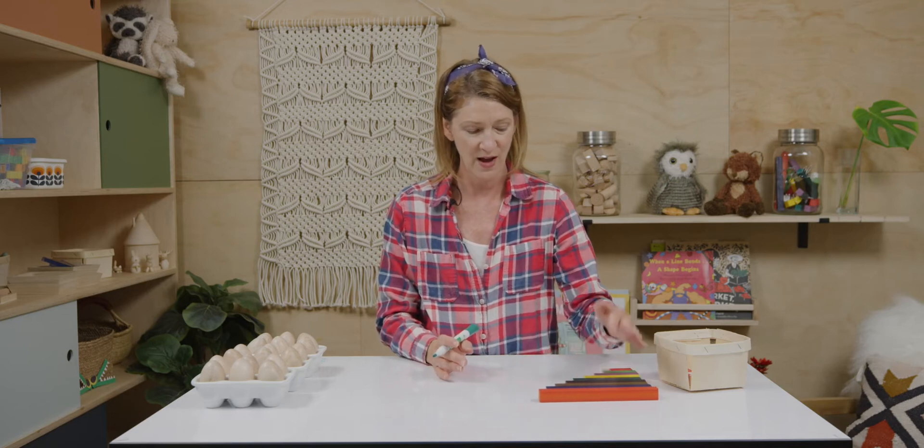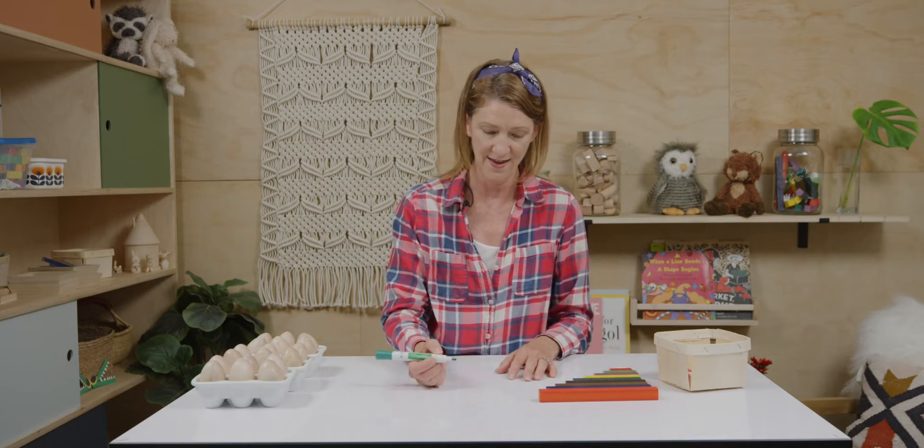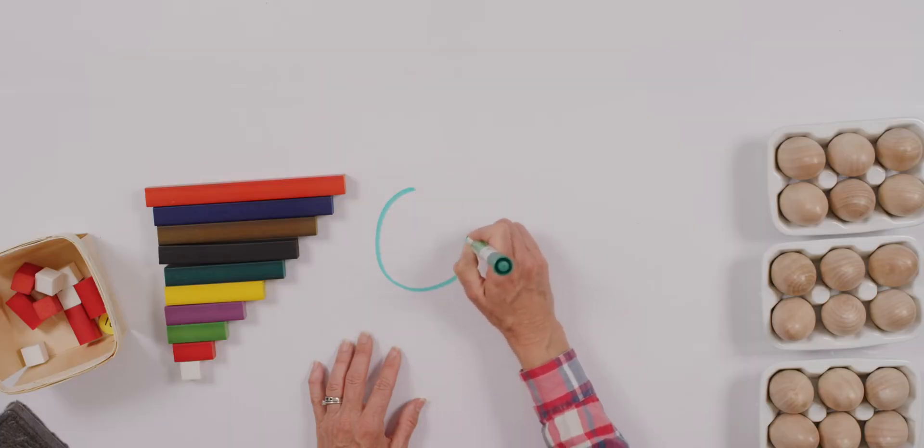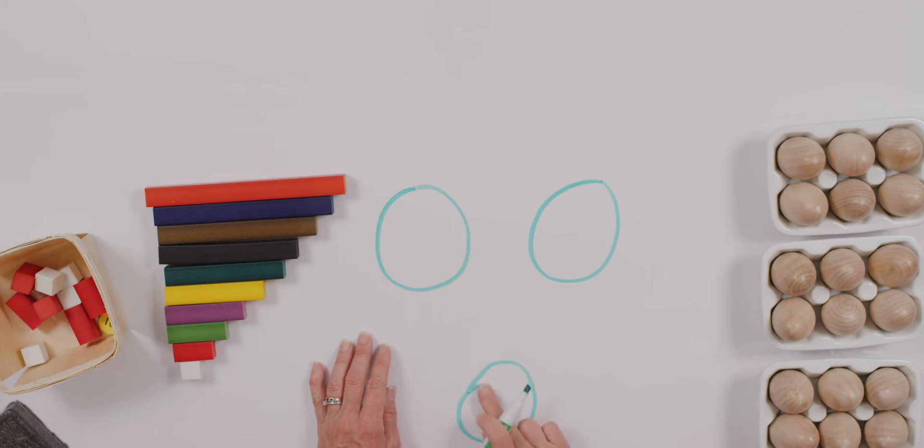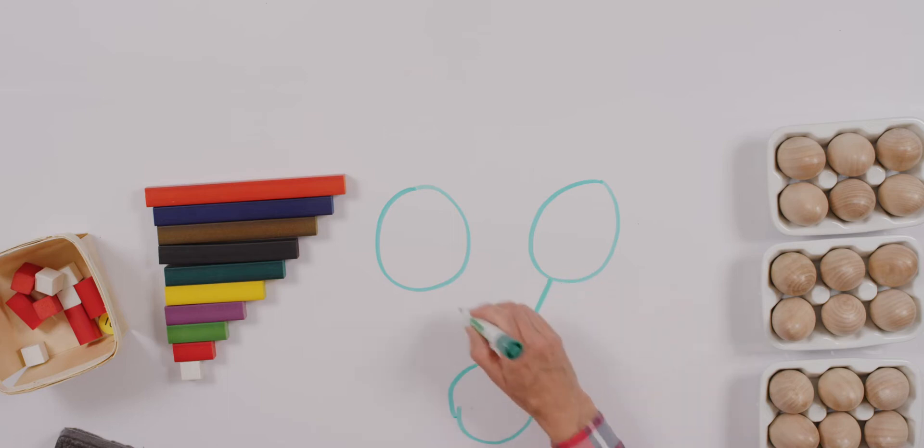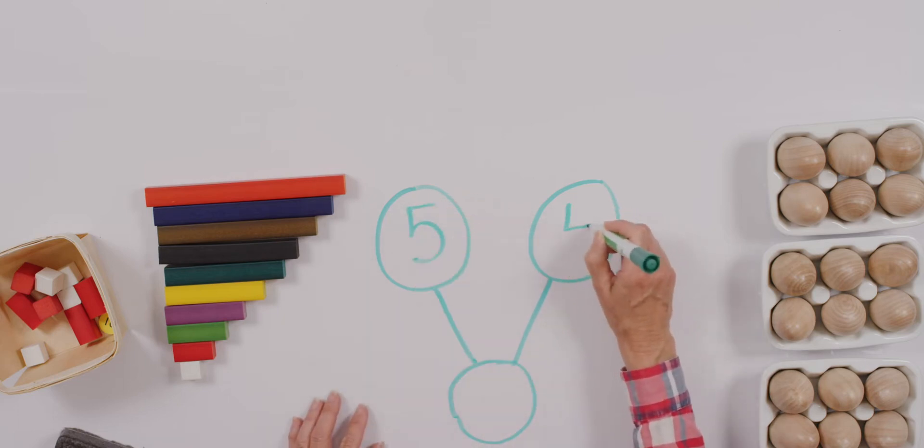All righty. Today we'll be talking about part, part, whole thinking and using some number bonds. So how about we start with thinking of my numbers. I wonder what numbers you think I'm thinking of. I'm going to put my whole. I didn't draw a very round circle, did I? My whole there and my parts up here. Now it doesn't matter which direction I put my number bond. So how about I put this here and this here. We'd say this is a part and this is another part. And we want to find the whole.